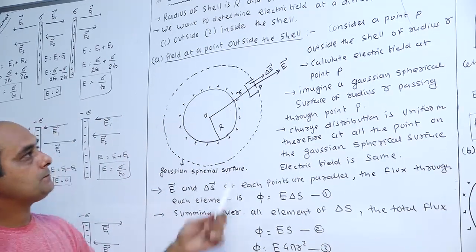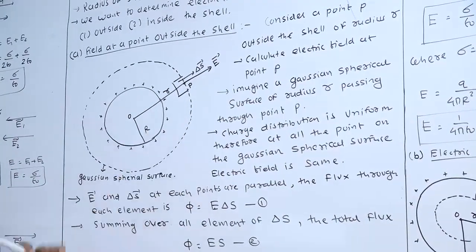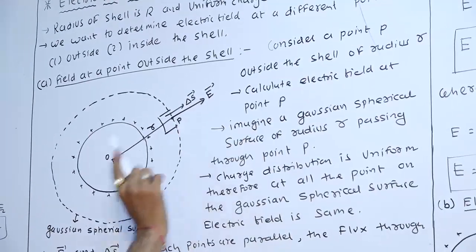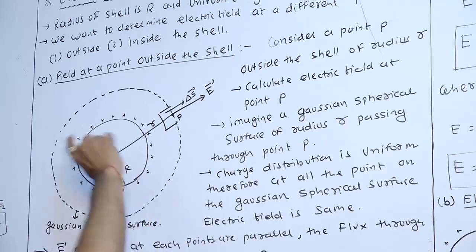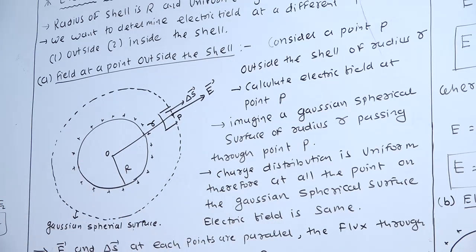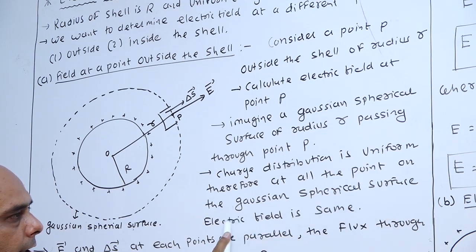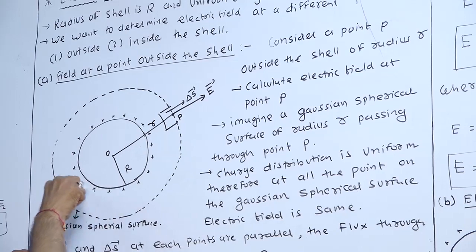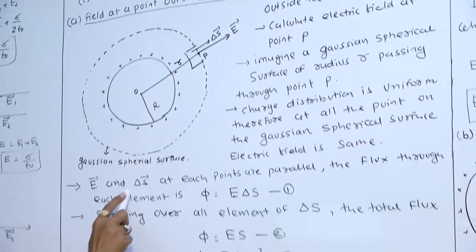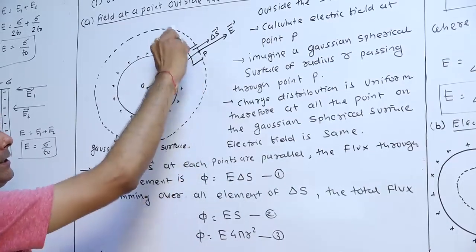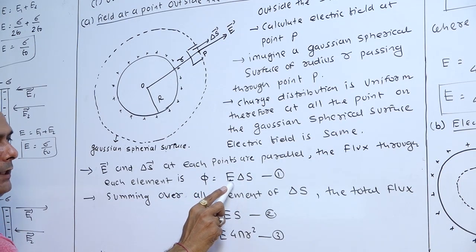Consider point B outside the shell of radius R. Imagine a Gaussian spherical surface of radius r passing through point B. Since charge distribution is uniform, at all points on the Gaussian spherical surface the electric field is the same. Vector E and vector delta S at each point are parallel. The flux through each element is phi equals E delta S, equation 1.